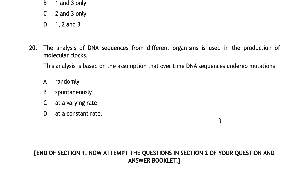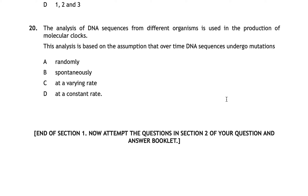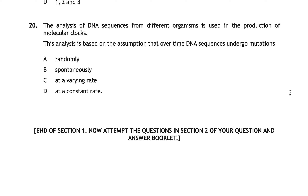The final question for 2018: the analysis of DNA sequences from different organisms is used in the production of molecular clocks. This analysis is based on the assumption that over time DNA sequences undergo mutations — A randomly, B spontaneously, C at a varying rate, or D at a constant rate. The correct answer is D — a constant rate of mutation is assumed. This was discussed during phylogenetics; assuming a constant mutation rate could be a limitation if the actual mutation rate is not constant.